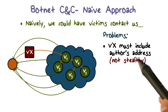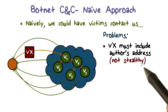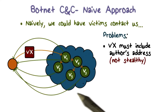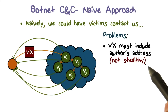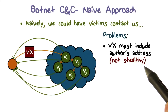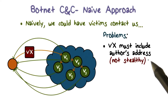The first problem with such an approach of hard-coding our contact information in the malware so that the victims can contact us is that it is not stealthy. It is a safe bet that eventually security admins will find out that there are bots on their network, and they may be able to obtain the bot code or the malware. Through malware analysis, they may be able to recover our hard-coded address. From there, they can identify us, so this is not stealthy at all.